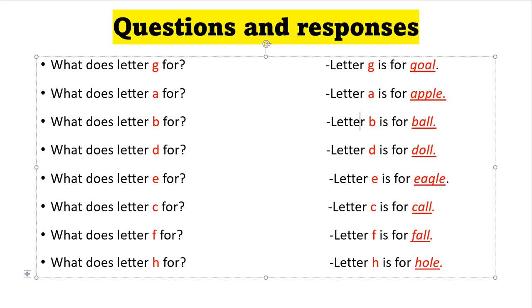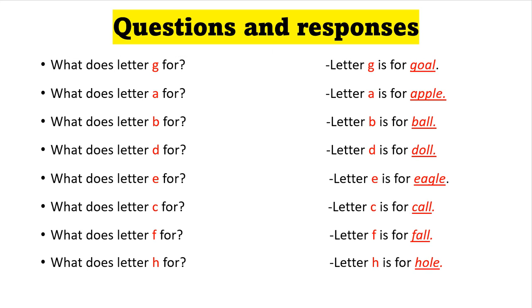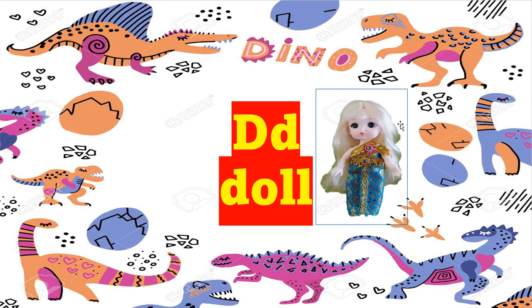Next, what does letter D stand for? Letter D is for doll. This is the toy of a girl — the doll. If you see here, this one is the doll.